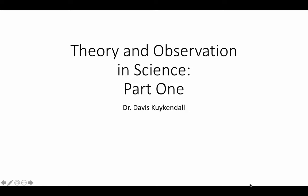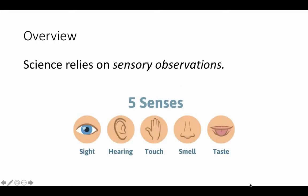In this lecture, we're going to look at the relationship between scientists' theoretical beliefs and their reliance on observation in conducting science — using the five senses. Science relies on sensory observations from what we consider the five senses: sight, hearing, touch, smell, and taste. Ultimately, most scientists' theoretical beliefs or claims or hypotheses come from some sort of sensory observation.